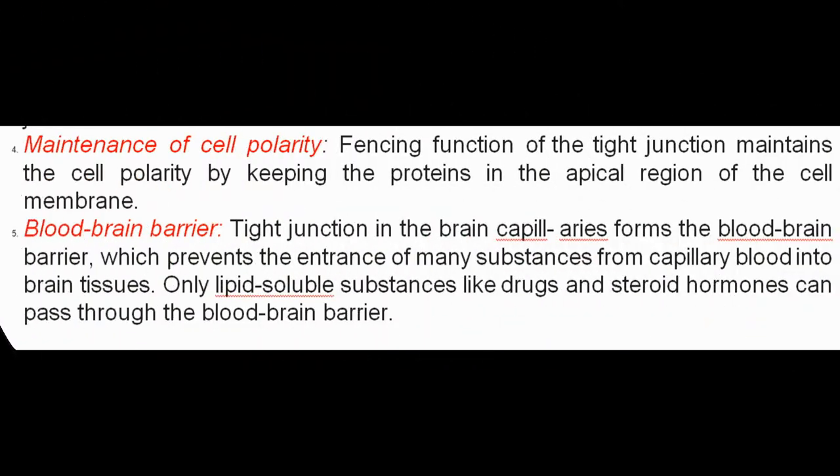Maintenance of cell polarity: The fencing function of the tight junction maintains cell polarity by keeping the proteins in the apical region of the cell membrane. Blood-brain barrier: The tight junction in the brain capillaries forms the blood-brain barrier, which prevents the entrance of many substances from capillary blood into brain tissues. Only lipid-soluble substances like drugs and steroid hormones can pass through the blood-brain barrier.